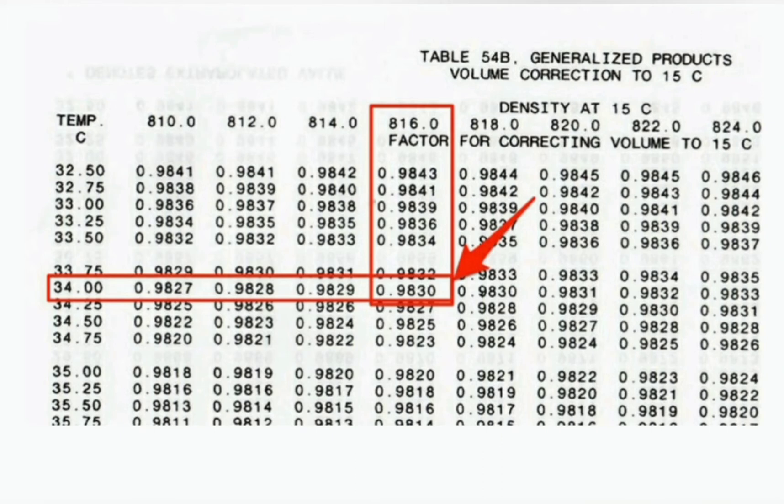ASTM tables give the volume correction factors (VCF) to find the volumes at temperature for which the density is given. Let us say the cargo surveyor provided the density at 15°C as 0.816 and ASTM table 54B to be used. Let us use the same volumes and temperatures that we have used in our initial example.